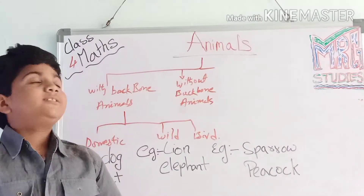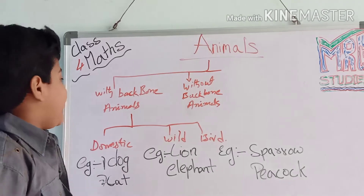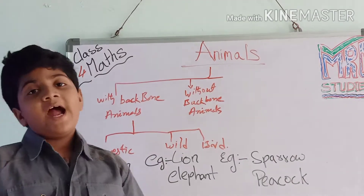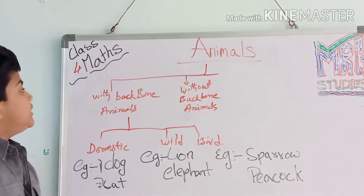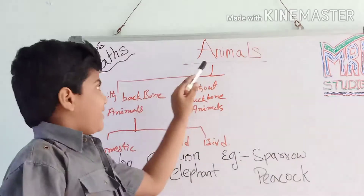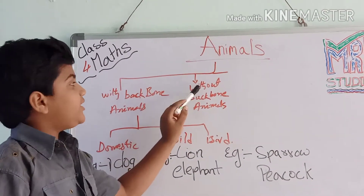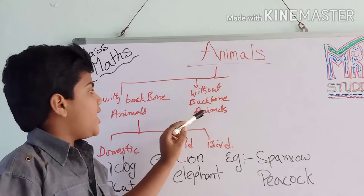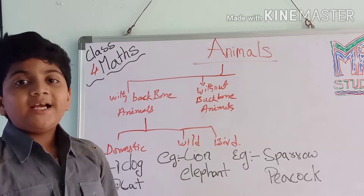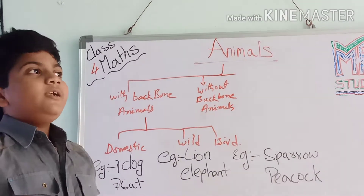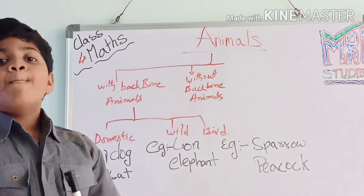Animals. Let's go to our topic. I show what is living in the earth. Living things: plants and animals. Next we discuss about animals. I will explain animal types. With backbone animals and without backbone animals. Backbone means we have a backside bone. Like when you do exercise, the backbone will move.